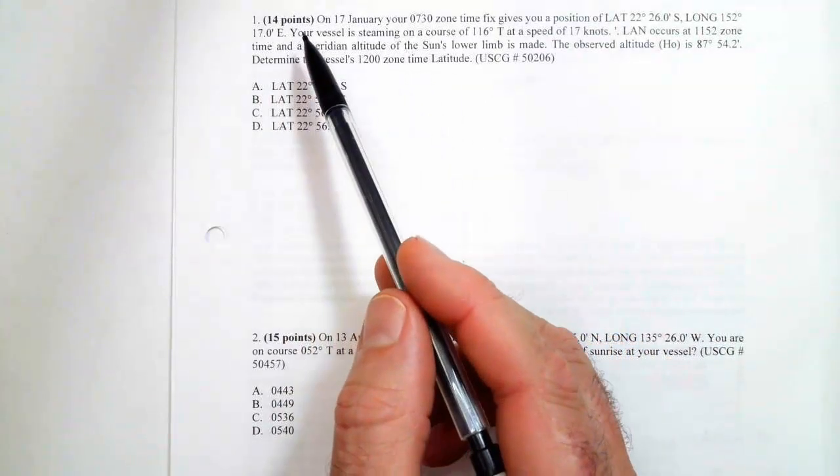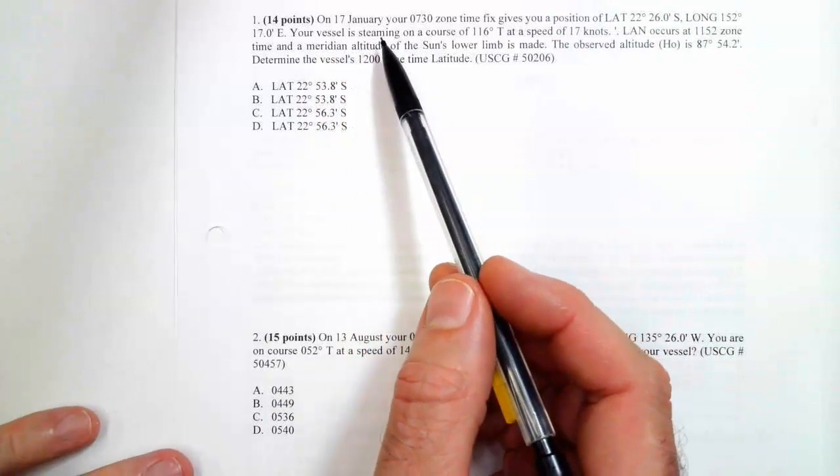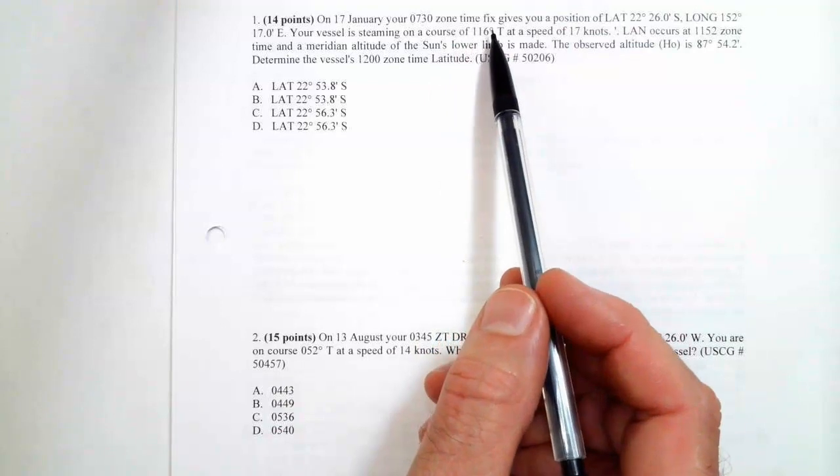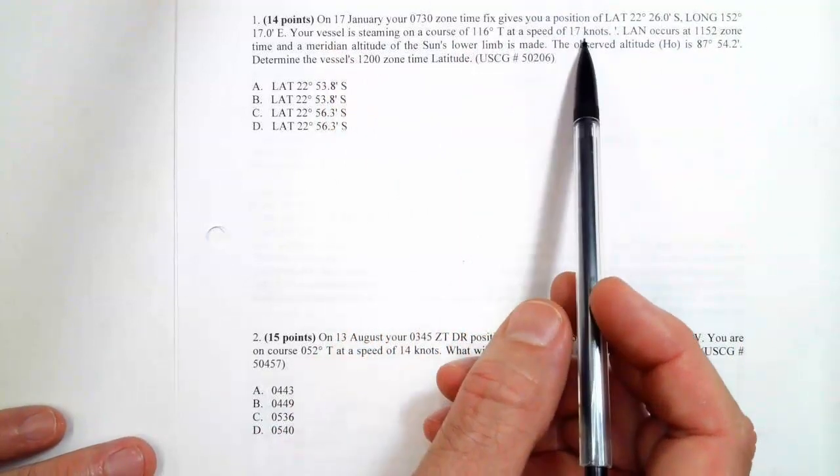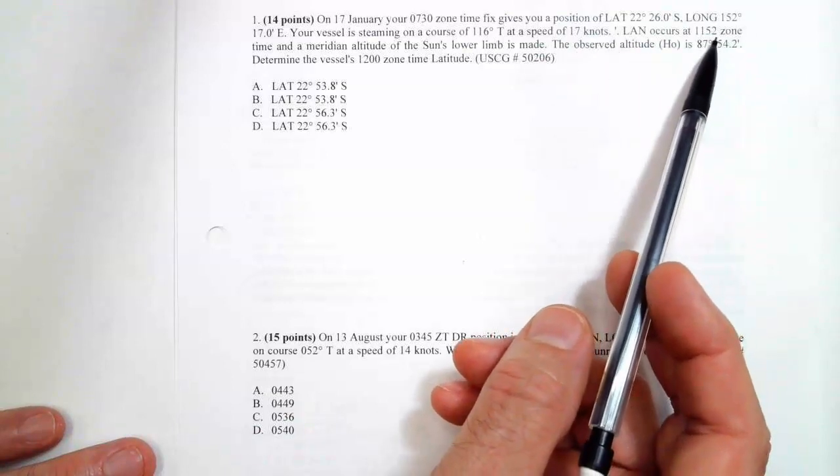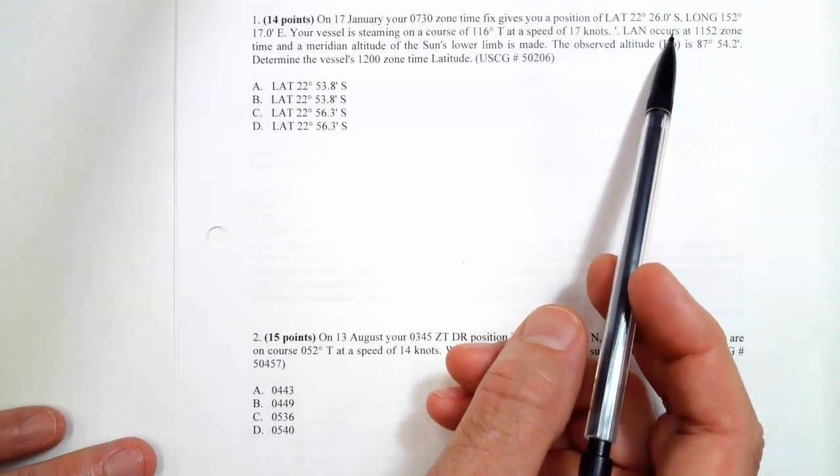Okay, so we're doing problem one of practice test two here. This is our problem. On 17 January, we got an 0730 fix which is here. We're steaming at 116 at 17 knots, and then they tell us that LAN occurs at 1152. So that's good to know.